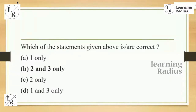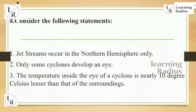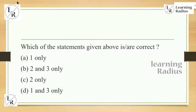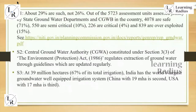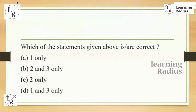The next question is related to the Central Groundwater Authority (CGWA). There was a discussion in January 2020: 'Take action on illegal groundwater extraction,' with figures published in the newspaper. UPSC framed a question from groundwater/Central Groundwater Authority — the first statement is wrong, and the second and third statements are right. The eighth question was related to jet streams. They framed a statement which is absolutely wrong about jet streams: 'Temperature inside the eye of a cyclone is nearly 10 degrees Celsius lesser than that of the surrounding' — that is a wrong statement. Since it's a physical geography question, we won't go into detail.